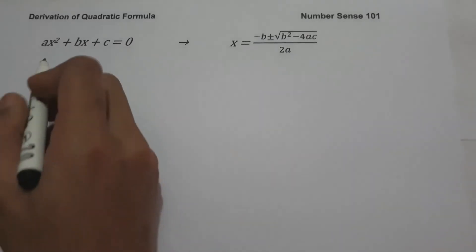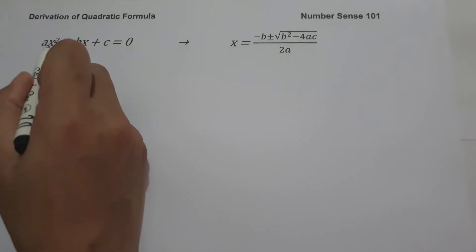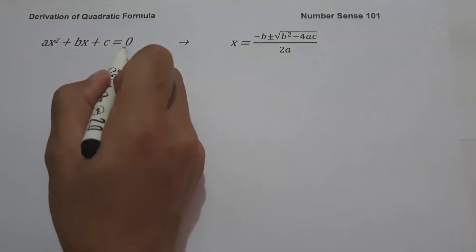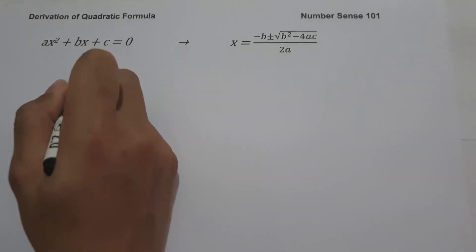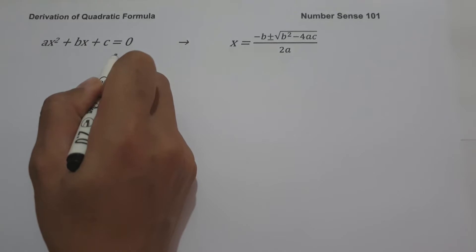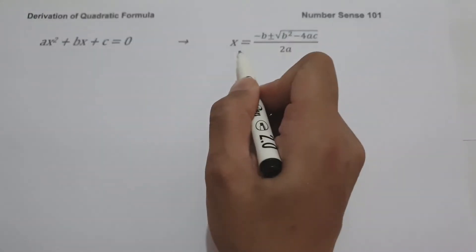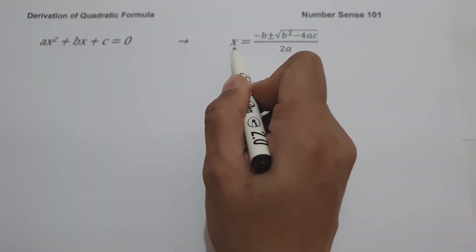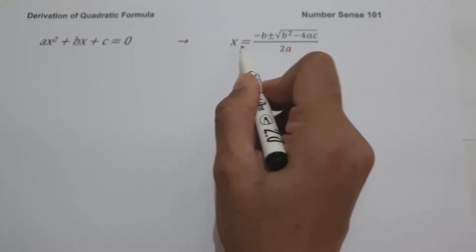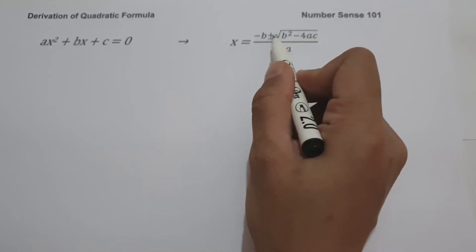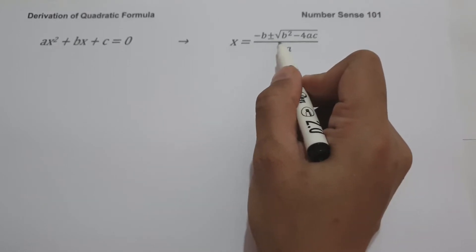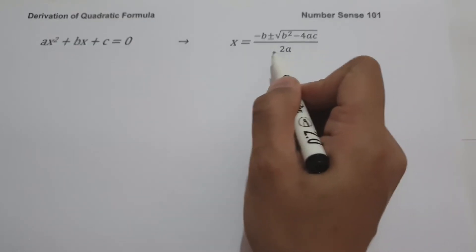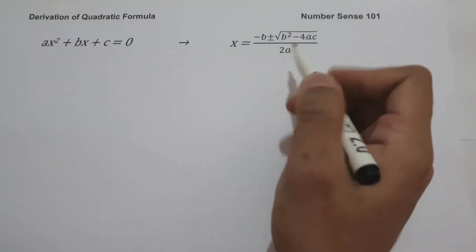As you can see, we have ax² + bx + c = 0. This is the standard form of the quadratic equation. On the other side will be the quadratic formula: x equals negative b plus or minus square root of b² minus 4ac, all over 2a.